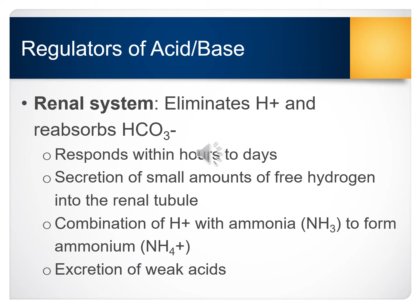There are times when the respiratory system is unable to correct the pH on its own, and then the renal system will kick in. The renal system will eliminate hydrogen and reabsorb bicarbonate, but typically the renal system does not begin to regulate acid-base imbalance until several hours and sometimes days after the imbalance has occurred. The three mechanisms of acid elimination by the renal system are secretion of small amounts of free hydrogen into the renal tubule, combination of hydrogen with ammonia to form ammonium, and the excretion of weak acids.